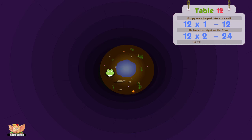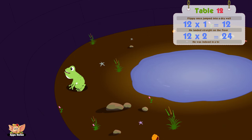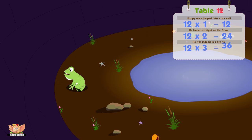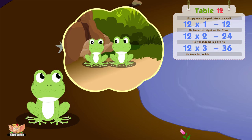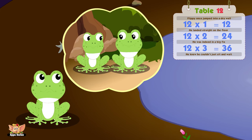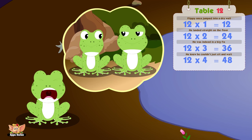He was indeed in a big fix. Twelve threes are thirty-six. He knew he couldn't just sit and wait. Twelve fours are forty-eight.